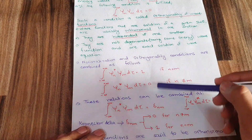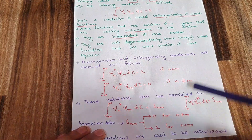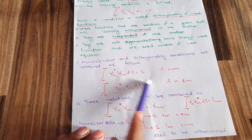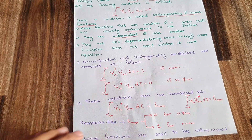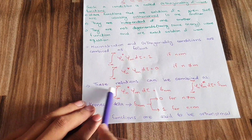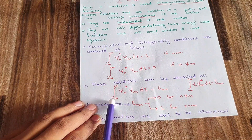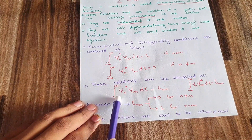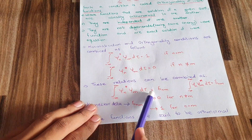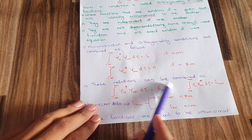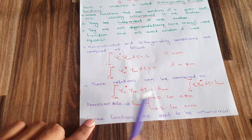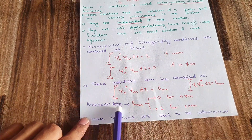On combining the normalization and orthogonality conditions, the equation becomes: the integral from minus infinity to positive infinity of ψ_n* · ψ_m dτ equals δ_nm, where δ_nm is the Kronecker delta.